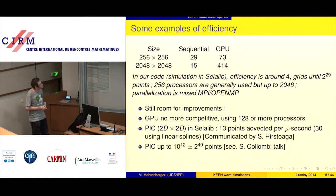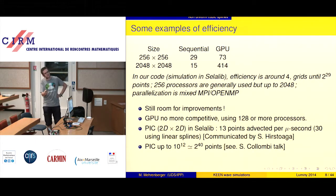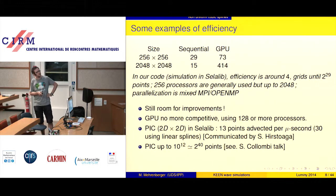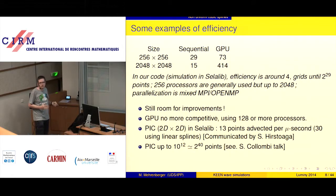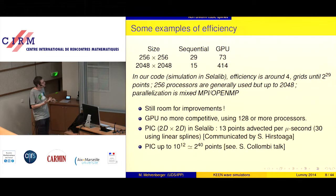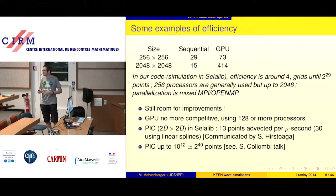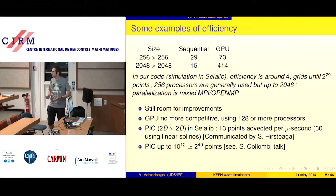In the Celalib framework running on many processors, the efficiency is reduced to about 4, but it is more general and not limited to one processor. We use grids up to large point counts, generally 2005–2006 processors but up to 2000, with mixed MPI and OpenMP parallelization. MPI is good, and adding OpenMP helps a little depending on the case. The first conclusion is that one GPU is very competitive, but if you use 100 or more processors, GPU is no longer competitive. Multiple GPUs are more complex to manage.